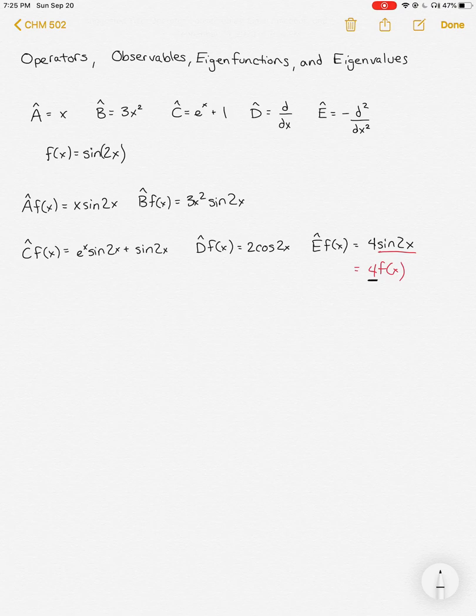In general, a function is an eigenfunction of an operator. So here we have operator A, an arbitrary operator, and we operate on some function. That will return a constant, we would note that here as little a times that function again. So if this is the case, this gives you an eigenfunction, which is our function here, and then an eigenvalue, which is the constant that comes out.